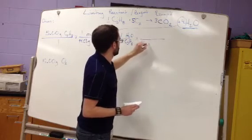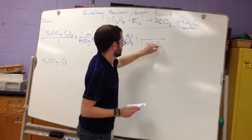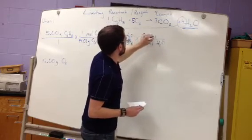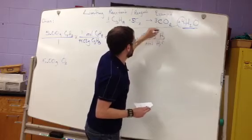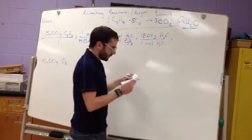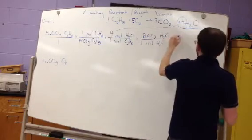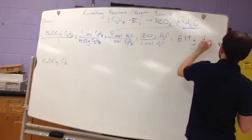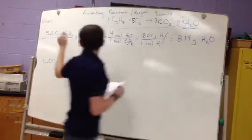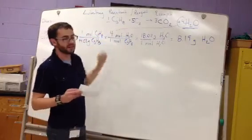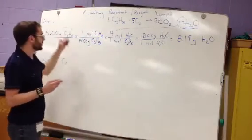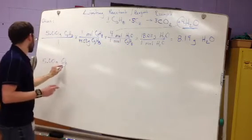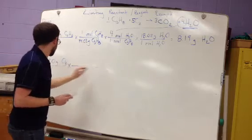Alright, next thing we go moles to grams. So we have 18.02 grams H2O. Again, I'm getting this from the periodic table. And when you do all that math, you'll get 8.19 grams of H2O. And again, you're multiplying 5 times 4 times 18.02, and then dividing it by 44.03. That will give you that number right there. We have to do the exact same thing for the oxygen.